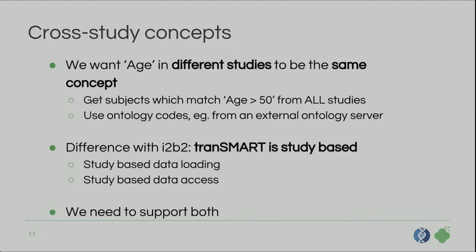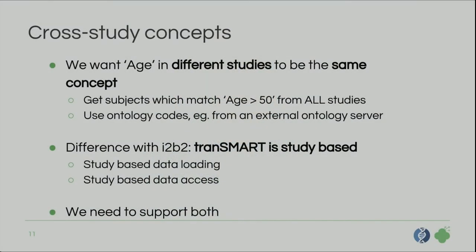For cross-study concepts, we want age in different studies to be the same concept, so we can just ask the database for everyone over 50 from all studies. We also want to be able to use ontology codes from an external ontology server — using preferred terms from an ontology server in the database. That said, the study-specificity of Transmart is also a power we like — we load data by study and set access on the study level. So we need to support both: cross-study querying and study-level access control.